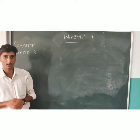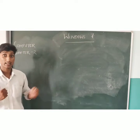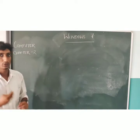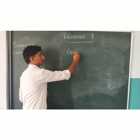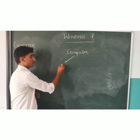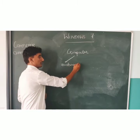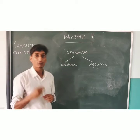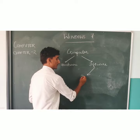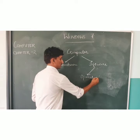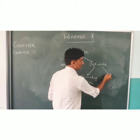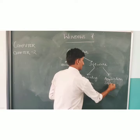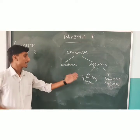Good morning students, welcome to computer class. Today we will study about Windows 7, which is your second chapter. First, a computer has hardware and software. Software has two types: one is operating system, and another one is application software. Windows 7 is an operating system.